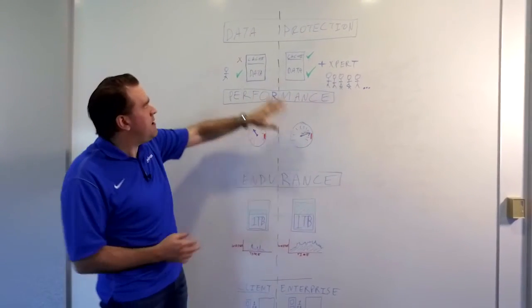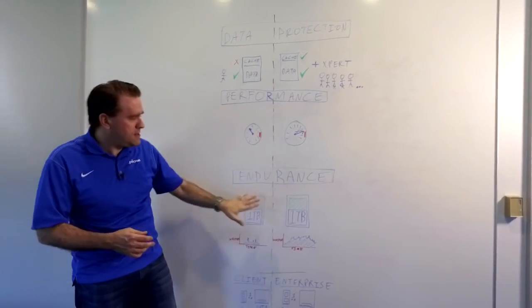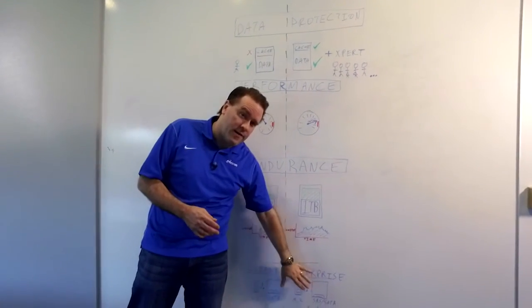So these are the three main areas—data protection, performance, and endurance—that all make up a great enterprise drive.